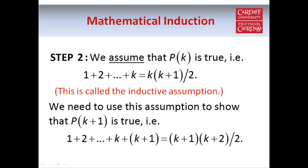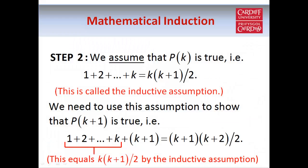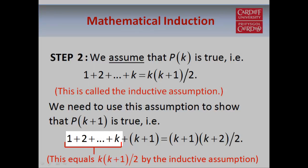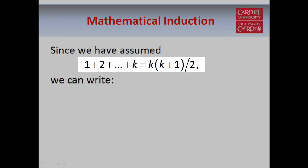Now we have to use this assumption to show that the statement holds when n equals k plus 1. So in other words, we have to show that the sum of the first k plus 1 natural numbers is equal to k plus 1 times k plus 2 over 2. Basically what we're going to do is use the fact that on the left-hand side we have the sum of the first k natural numbers, and we've assumed that this is equal to k times k plus 1 over 2.